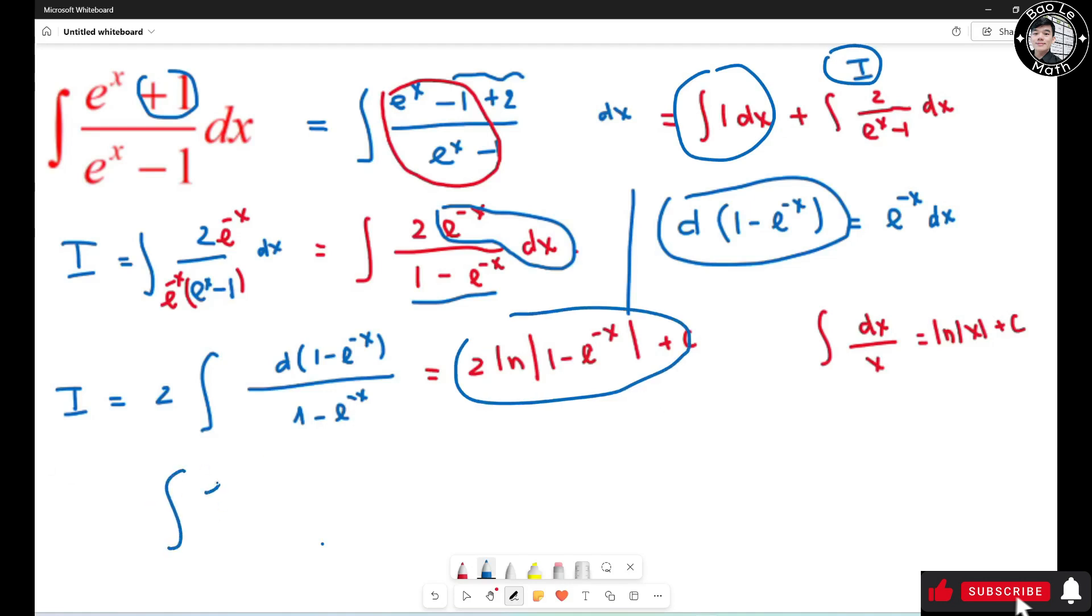The final answer is this first integral plus I. So the integral of e to the x plus 1 over e to the x minus 1 dx equals x plus 2 natural log of absolute value of 1 minus e to the negative x plus C.